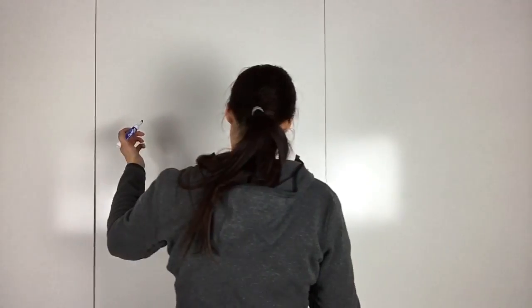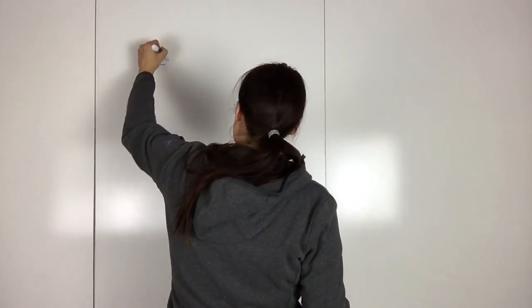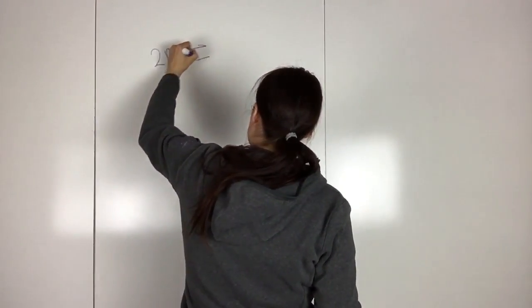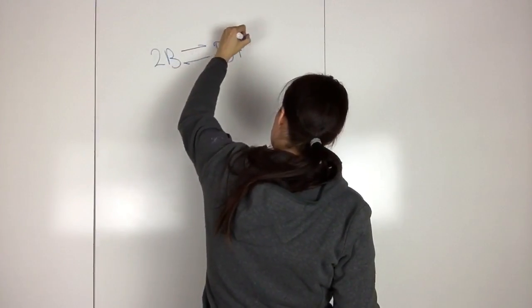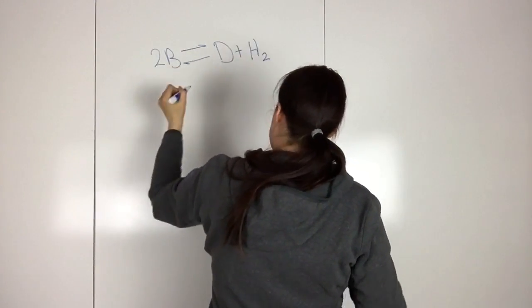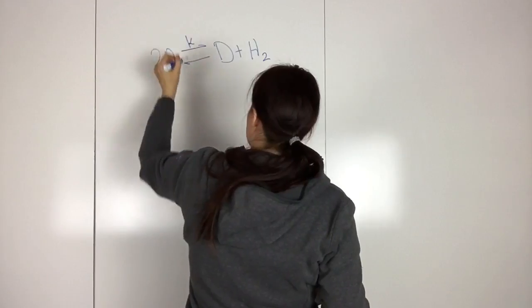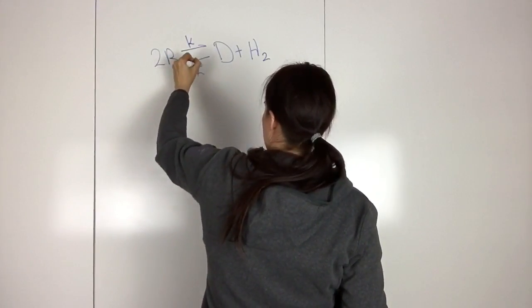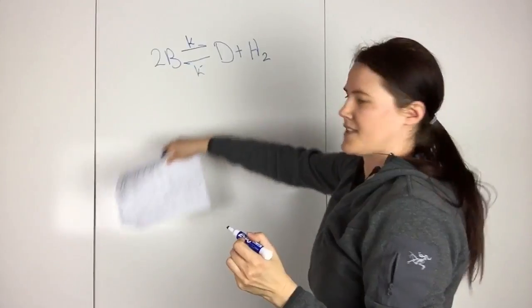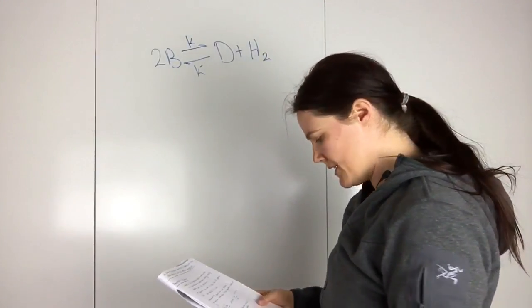I wanted to look at rate laws for reversible reactions. So far, all the rate laws I've gone over have been assuming irreversible reactions. Let's assume that we have a reversible reaction that looks like this: 2B ⇌ D + H2. We have this rate constant here, and another one here, because you have a separate rate constant for the reverse reaction.